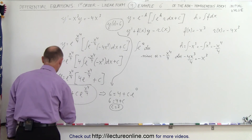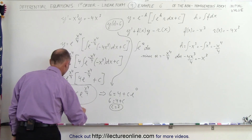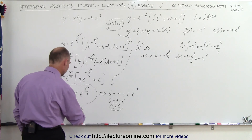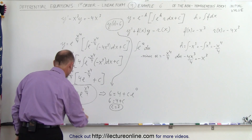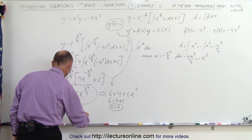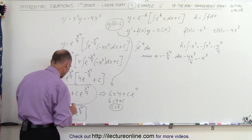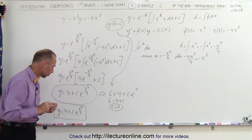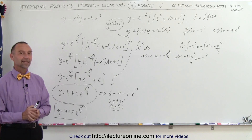We can plug C equals 2 back in, so y equals 4 plus 2 times e to the x to the fourth over 4. That is the final solution, including the initial condition. And that's how we solve a problem like that.